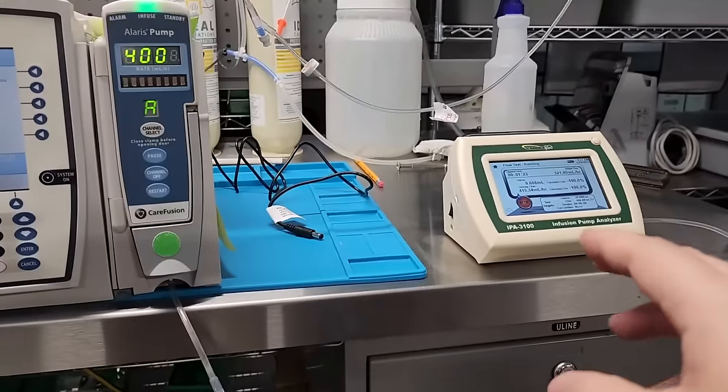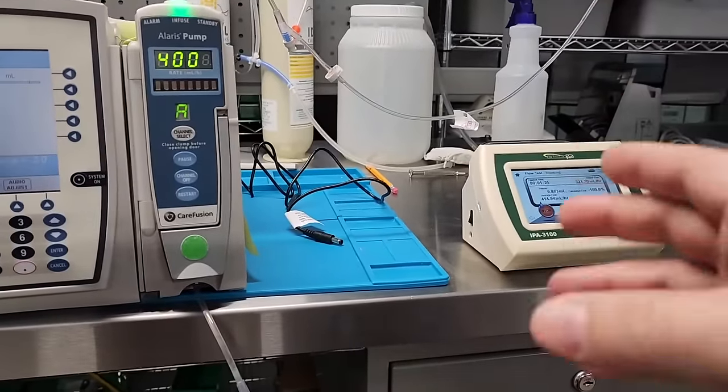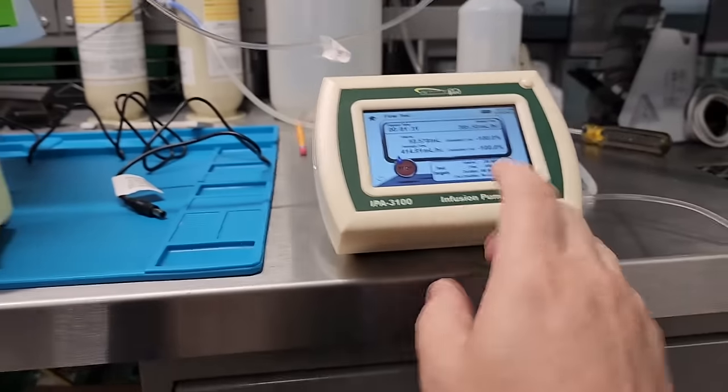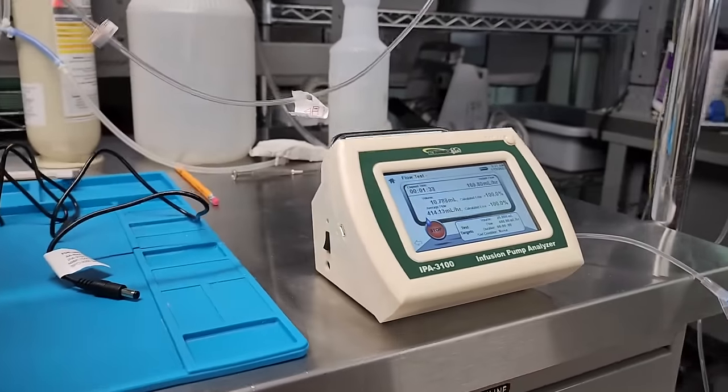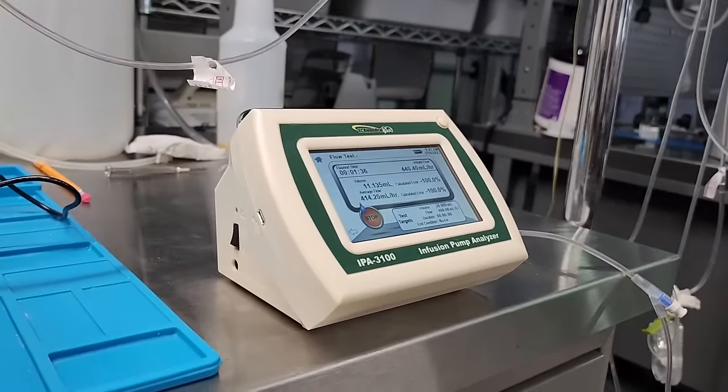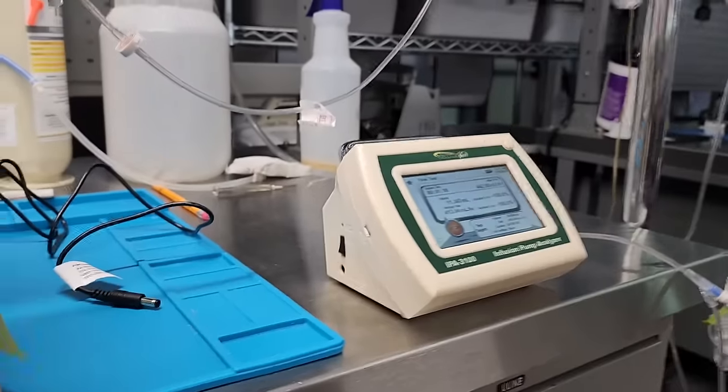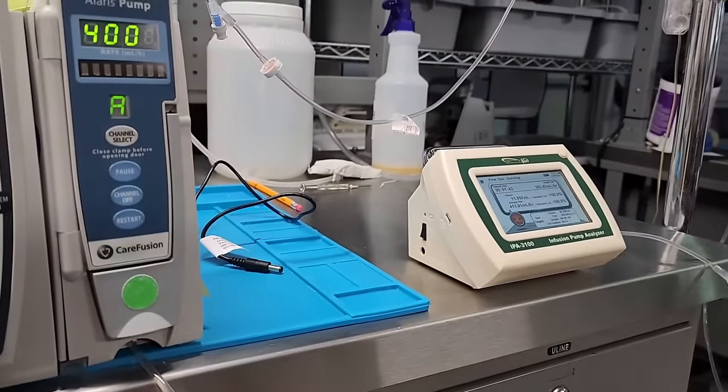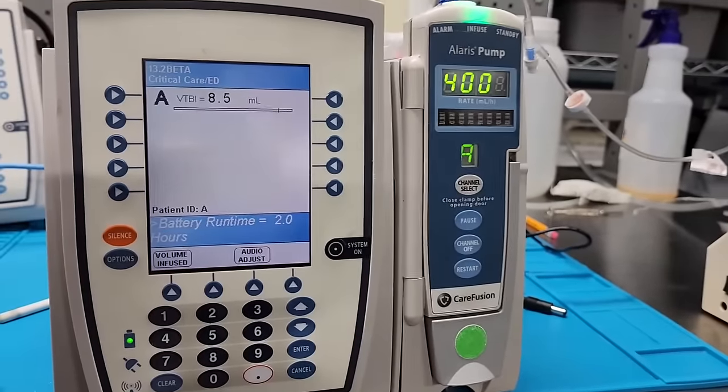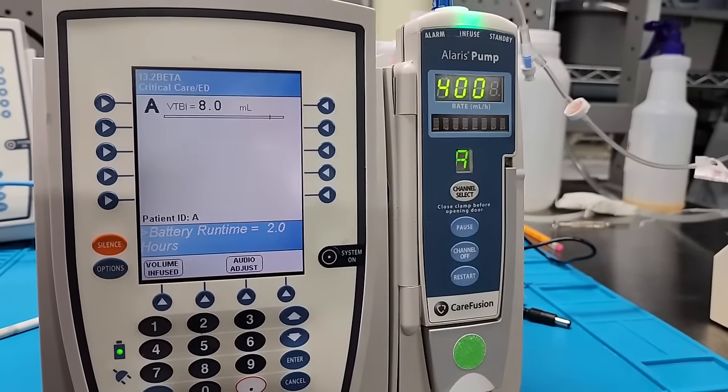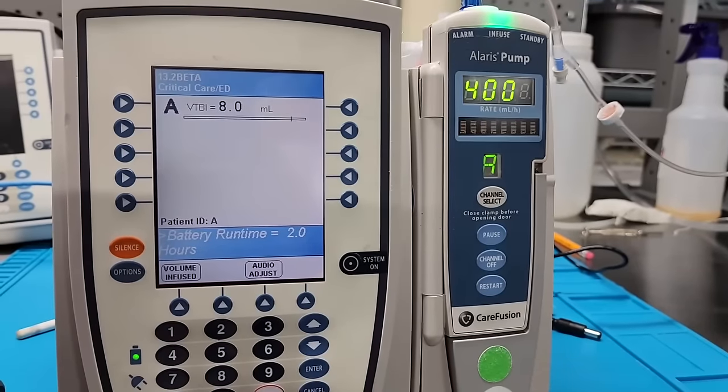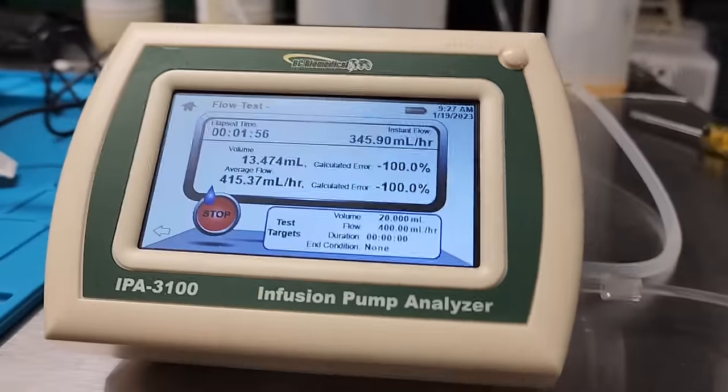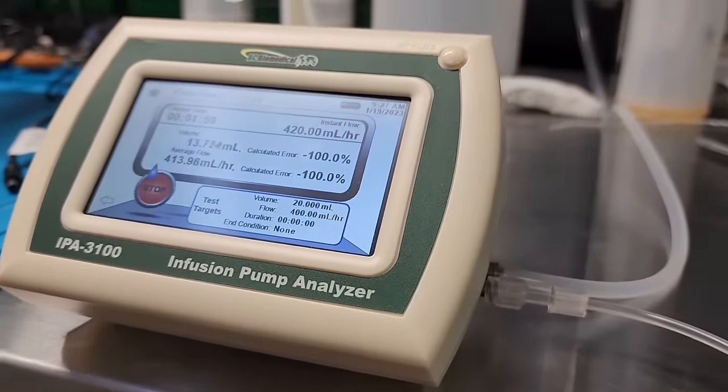So mind you guys, this is a prototype. There's things that could be changed between now and its release date. This guy is not on the market yet. I am thrilled that BC Group sought me out to do a video before it even hits the market. That way I can take a look at the operating system, its menu, see if there's anything that might need changing before it hits final production. Very cool. Let's see, we've got 7 milliliters left to go. At 400 milliliters per hour, this is actually a pretty quick test.